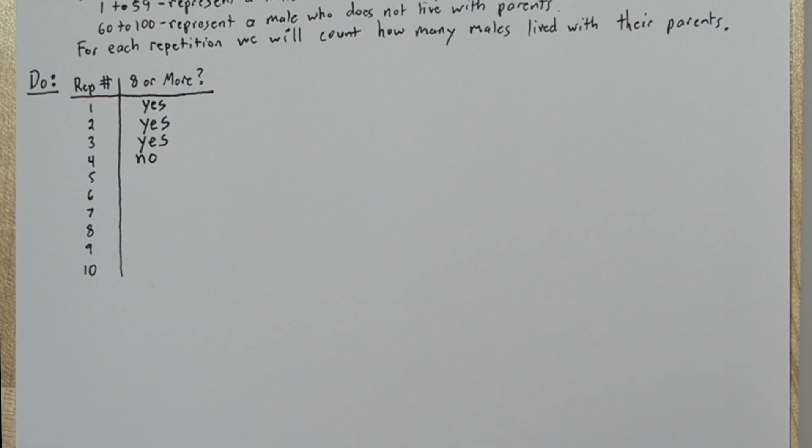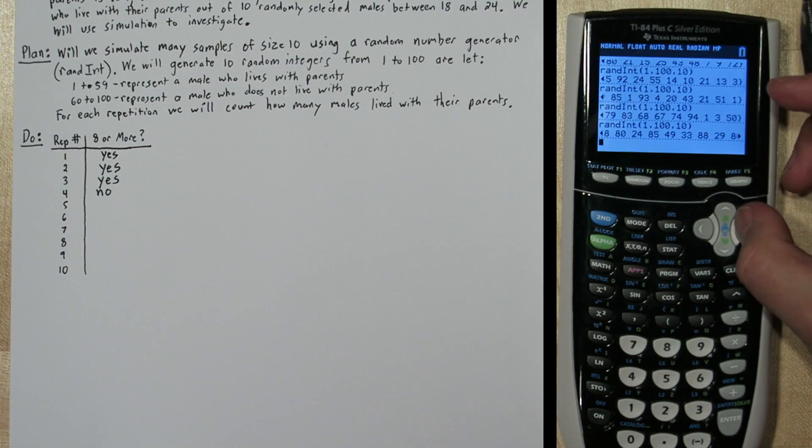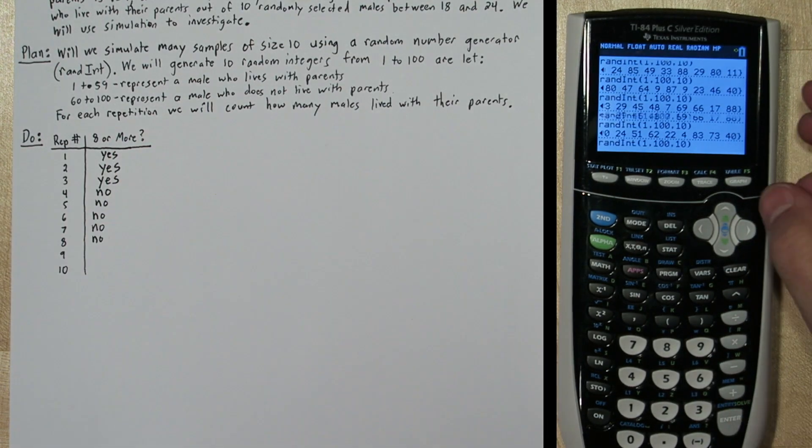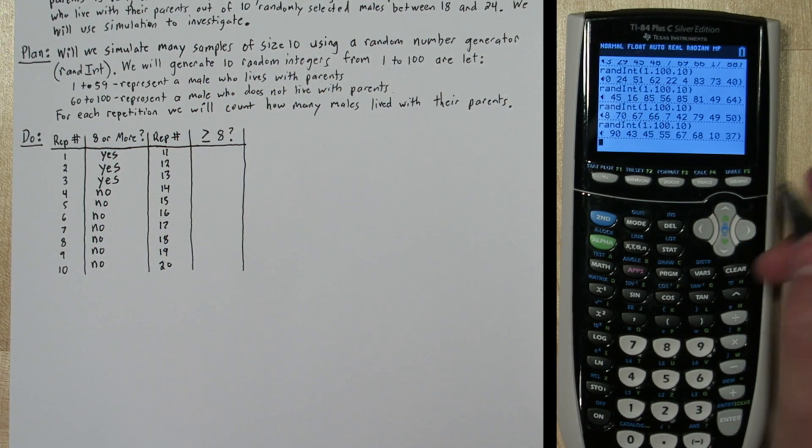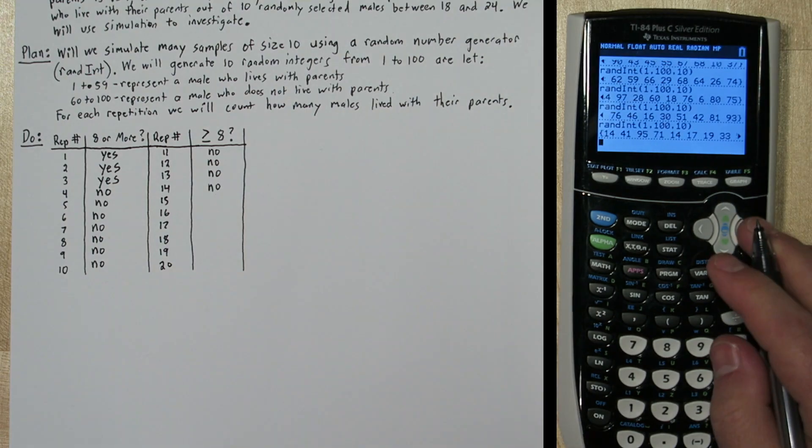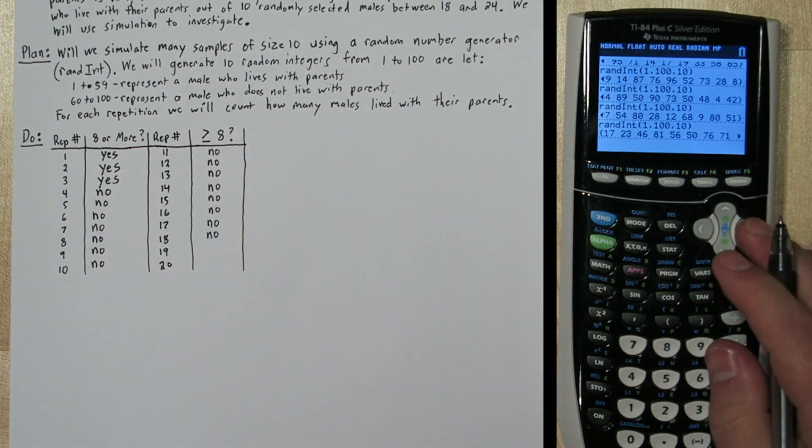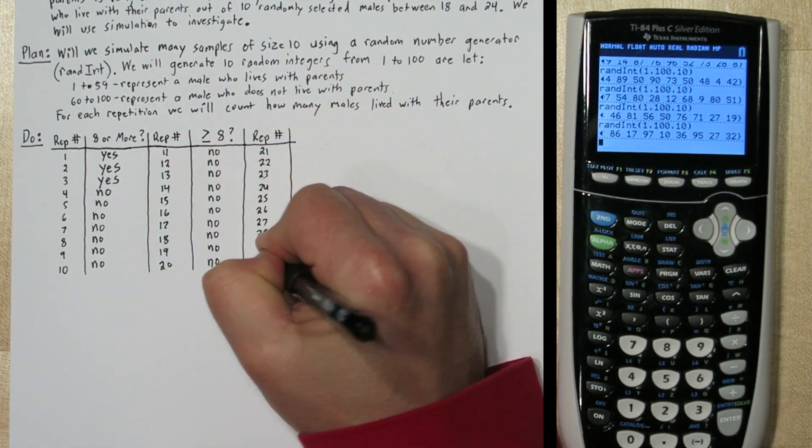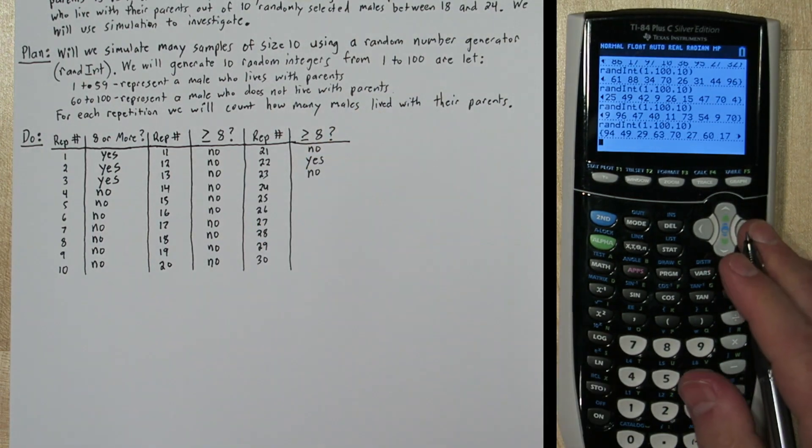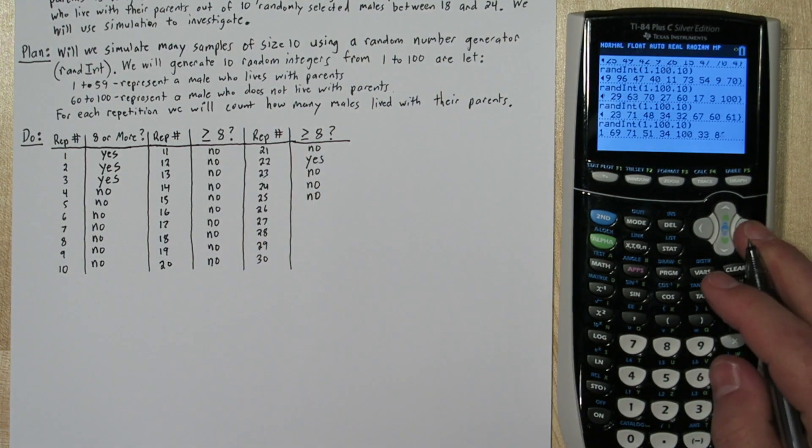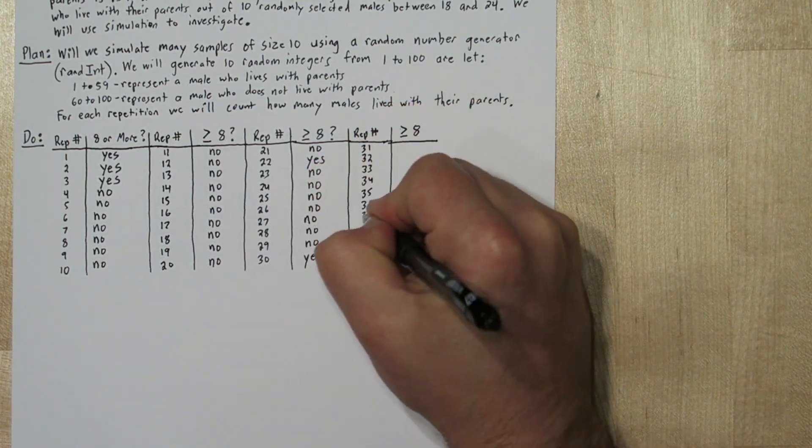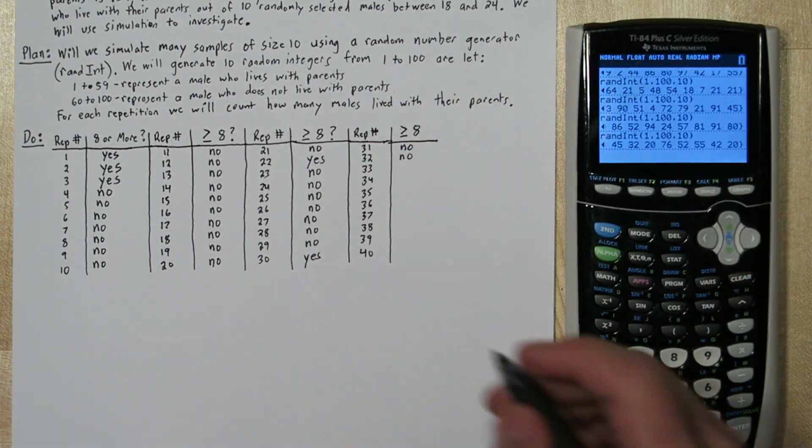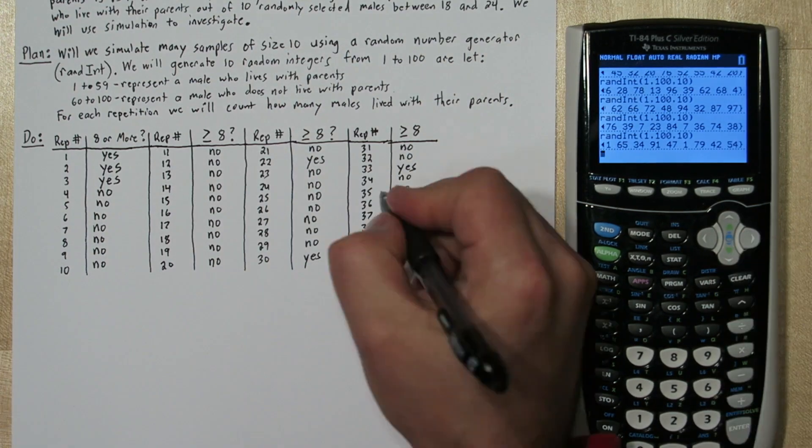So we're going to perform 40 repetitions total. Now one thing you might be thinking about is what about repeated numbers? Like what if you get the same number generated twice in your list of random numbers? That's okay. We just want to make sure that each of our numbers has a 59% chance of being between 1 and 59. And it does.